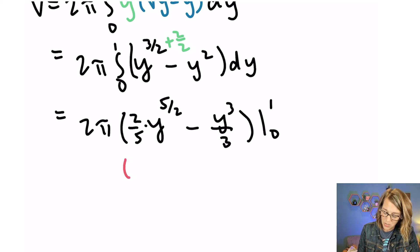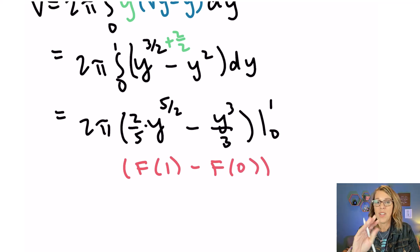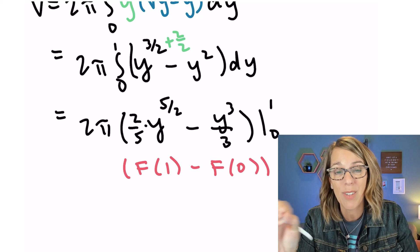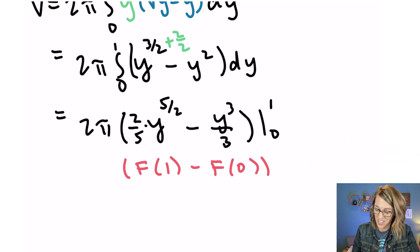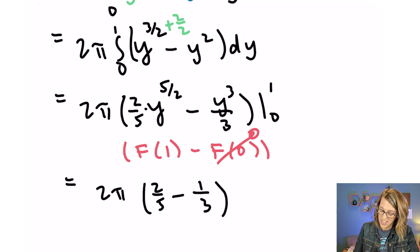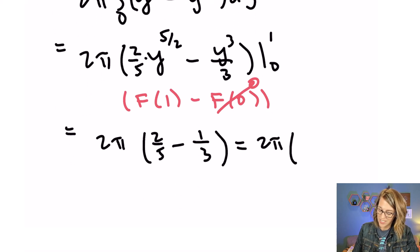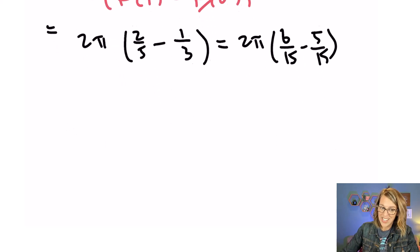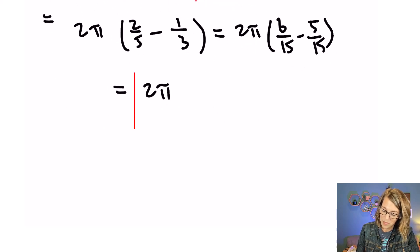Now I really do need to do the anti-derivative at 1 minus that anti-derivative at 0. But notice that every term has a y in it. So when I put a 0 in, it's just going to go away. So all I've got to do is to plug in 1. So I get 2π times 2/5 times 1^(5/2) minus 1/3. So if I do the math there, I get 2π. That's going to be 6/15 minus 5/15. And we end up with our answer, which is 2π/15.